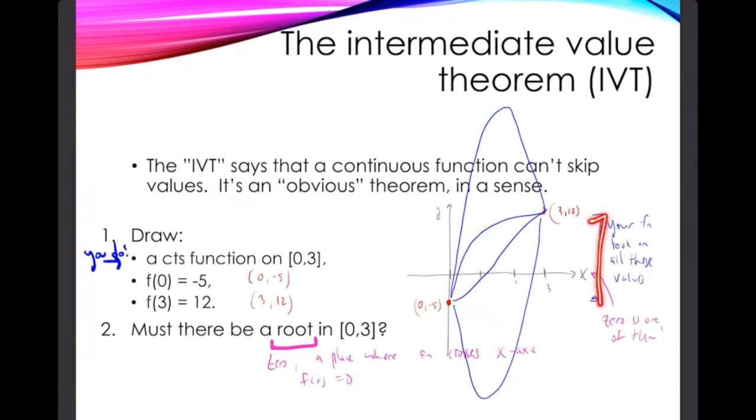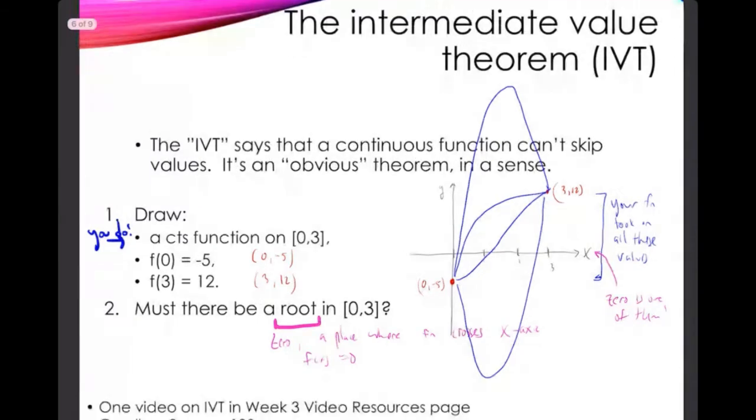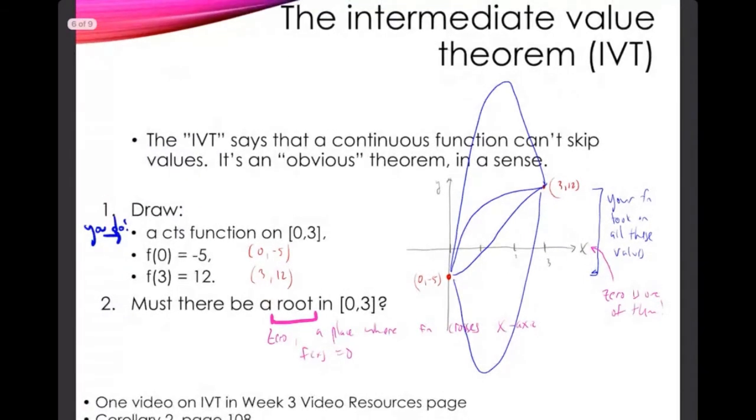And look, zero is one of them. Zero is one of them. Look, this interval of output values that my function is guaranteed to take on includes zero. So must there be a root? The answer is yes. All values in the interval from minus five to 12 are guaranteed to occur.